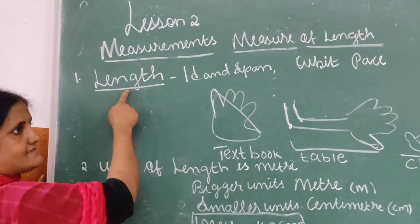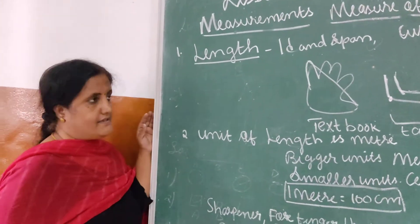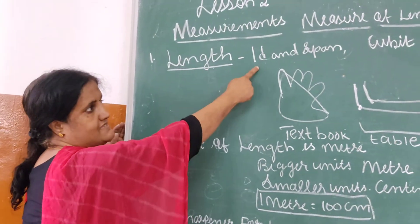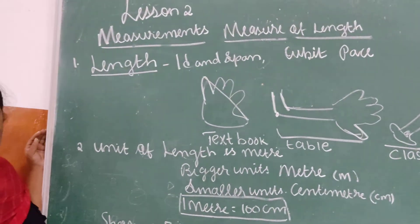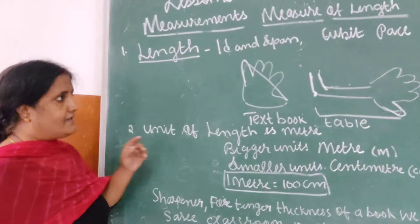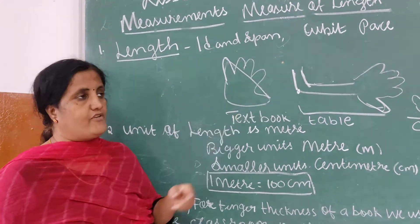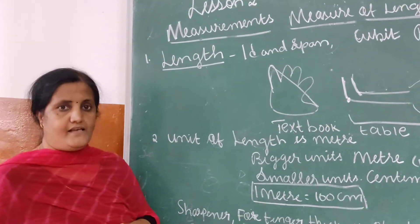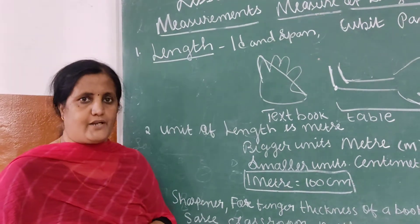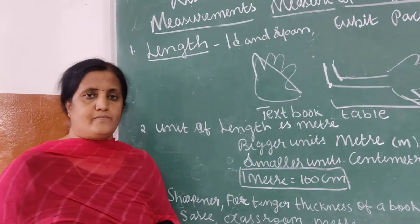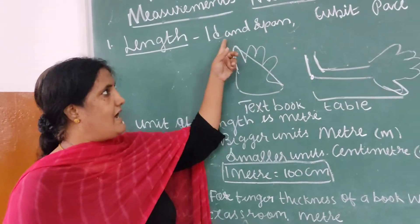Measurements of length. See children, in olden days length was measured by hand span, cubit, and space. Children, do you know what is hand span? The distance between the little finger and the thumb is called a hand span. They used hand span not only in olden days but nowadays also. For example, to measure a textbook they use the hand span.